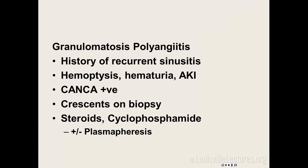GPA — granulomatosis with polyangiitis, formerly known as Wegener's — can be remembered by the four C's: C-shaped nose from recurrent sinusitis, c-ANCA positive, crescents on biopsy, and treatment with cyclophosphamide. If they have alveolar hemorrhage, you can also do plasmapheresis. They don't have to have lung abnormalities — they can have kidney findings alone.